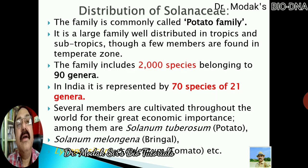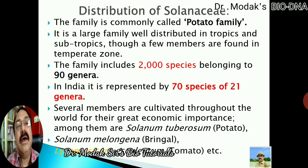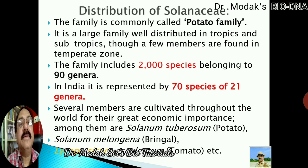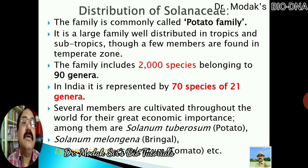If we talk about the distribution of Solanaceae, which is commonly called the potato family, it usually occurs in tropics and subtropics. A few members are found in the temperate zone also. Especially it occurs in countries near to the tropics — the tropical atmosphere on both sides of the equator — where this family's members are found in large numbers.